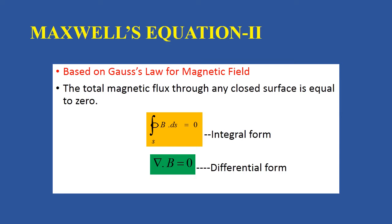Maxwell's Equation 2 is based on Gauss' law for magnetic field. According to this, the total magnetic flux through any closed surface is equal to zero. So, the surface integral of B dot dS equals zero. This is the integral form of Maxwell's Equation 2, and the differential form is del dot B equals zero.